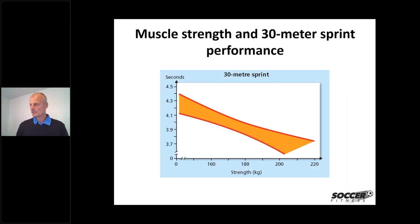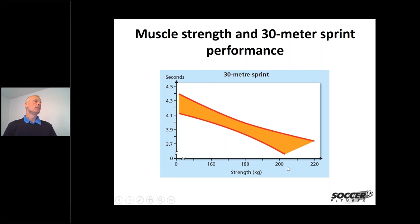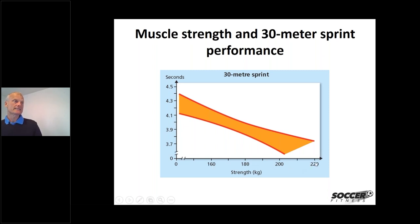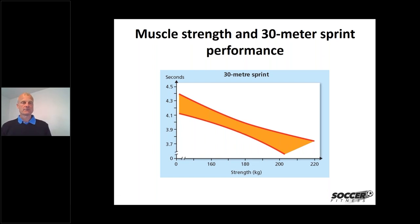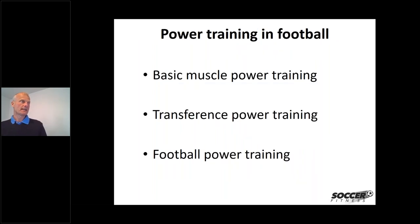Moving on to power training in football: the higher power a player has, the more explosive they can be in a game. Data shows that leg strength — measured by how much force you can generate with your legs — correlates with 30-meter sprint time; the more leg power you have, the faster you are. However, there is a large range, partly due to differences in agility and coordination, which we will discuss further. There are three types of power training: basic, transference, and football-specific power training.